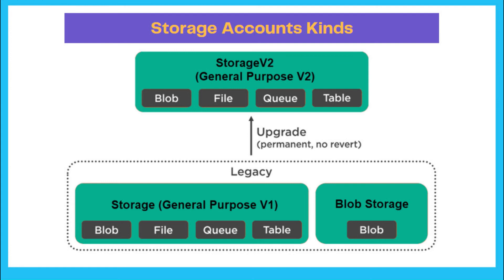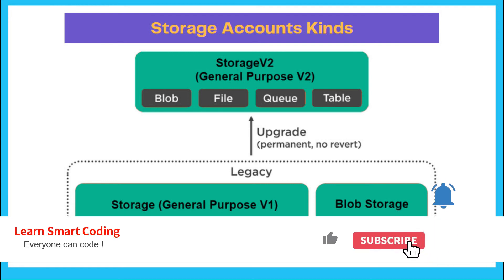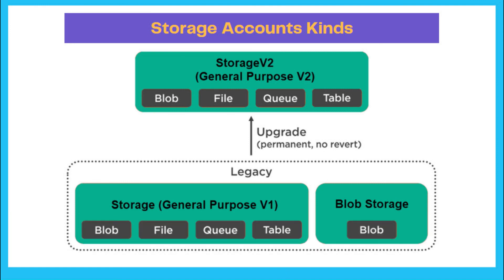Next, let's understand storage account kinds. The legacy accounts are Blob Storage (blob only) and General Purpose v1 (blob, file, queue, table). The current recommended option is General Purpose v2, which supports blob, file, queue, and table. You can upgrade from v1 to v2, but this is a permanent change — you cannot revert. Many new features are only available in v2, so it is always recommended to use v2 unless you have a strong reason not to.